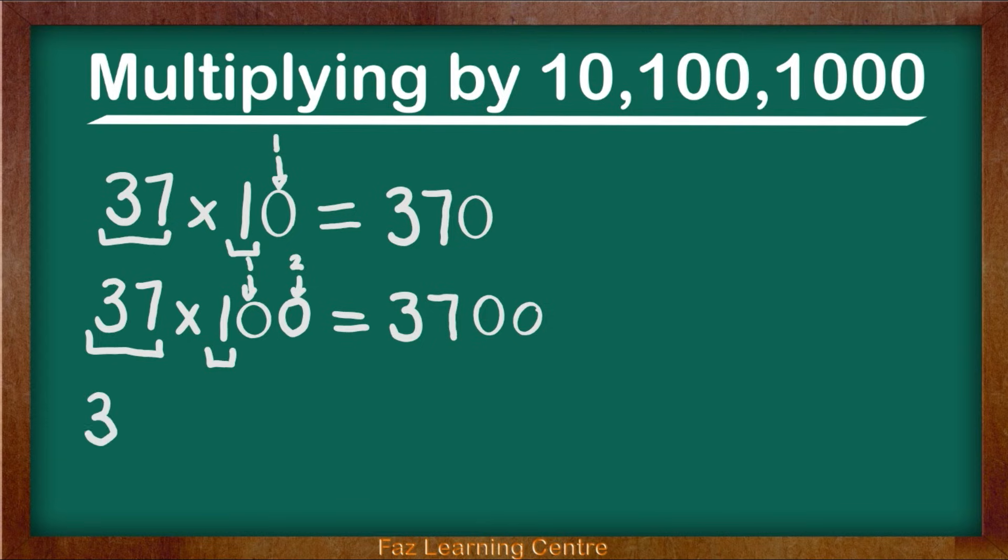37 times by 1,000. So we are going to think about 37 times by 1 is 37. Now let's look at how many 0's we have. 1, 2, 3.